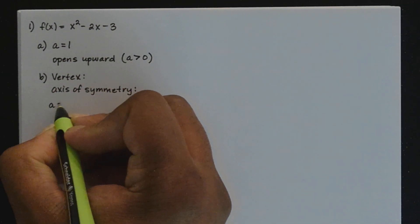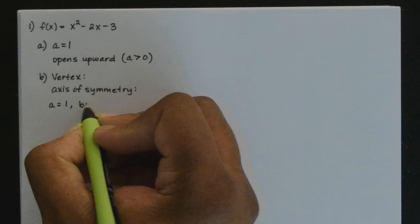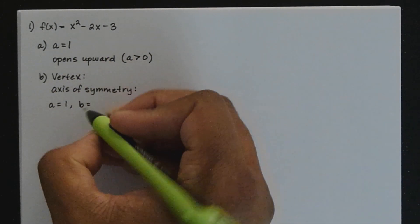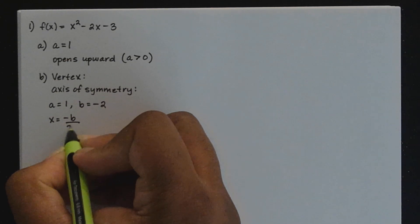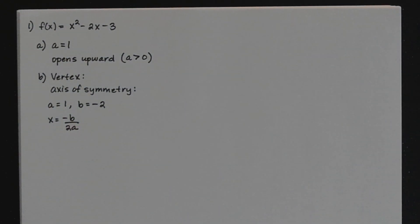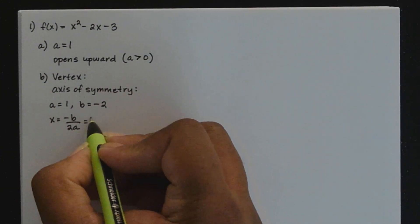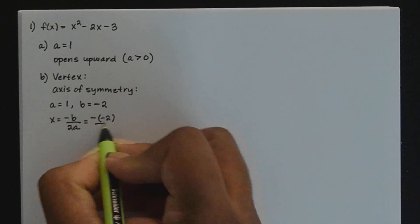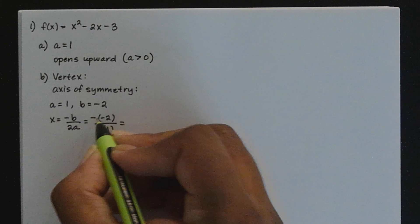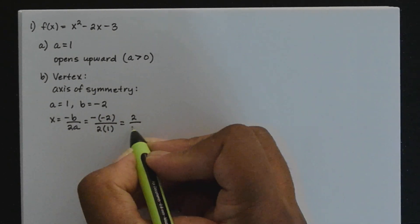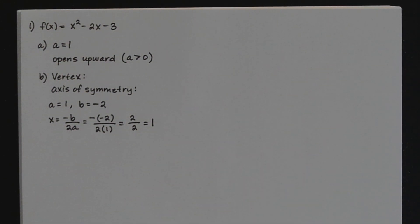We need to know what A is and we need to know what B is. A is equal to 1. B is the coefficient of x — what's B here? Negative 2. So to get the x-coordinate of the vertex, you use x equals negative B over 2A. Let's do our substitution: bring this negative sign over, replace B with negative 2. So we have negative of negative 2 divided by 2 times A, which is 1. Negative of negative 2 is 2; the denominator, 2 times 1 is 2; 2 divided by 2 is 1. So your x-coordinate of this vertex is 1.